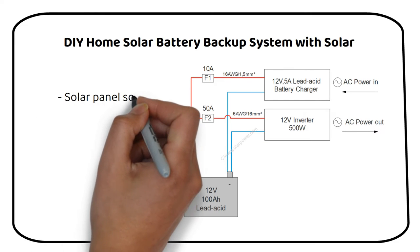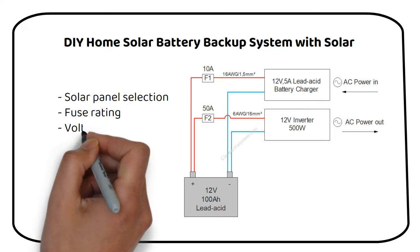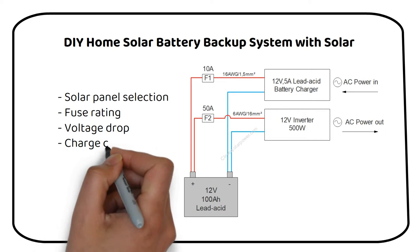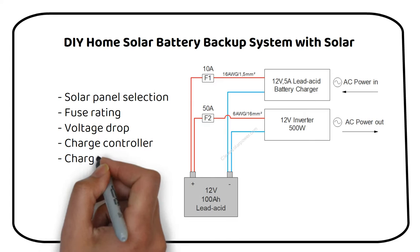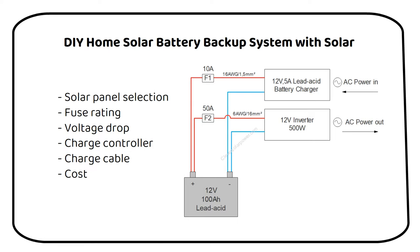We will start by selecting the solar panels and adding a fuse. Next we will calculate the voltage drop over the wires and select a charge controller. We will choose a wire with a fuse holder and will go over the cost of this expansion at the end.